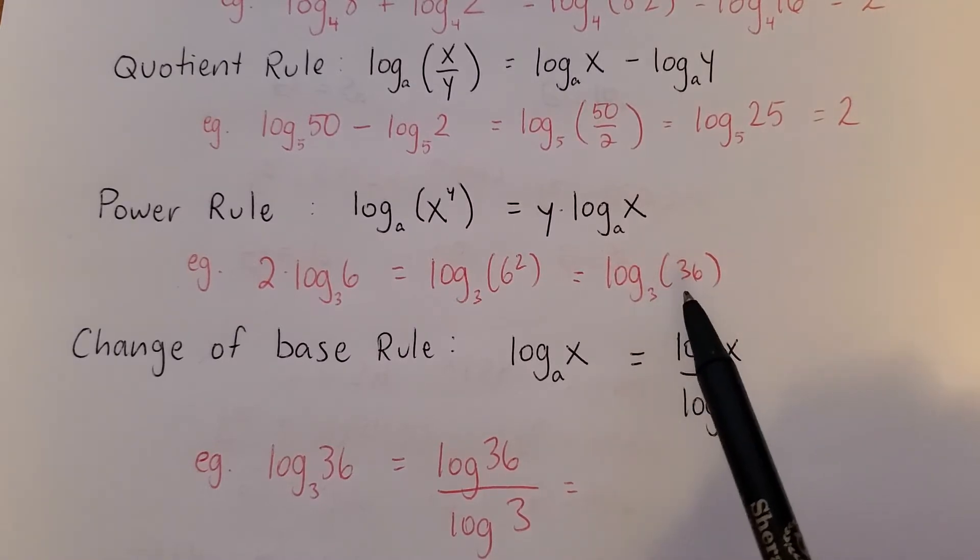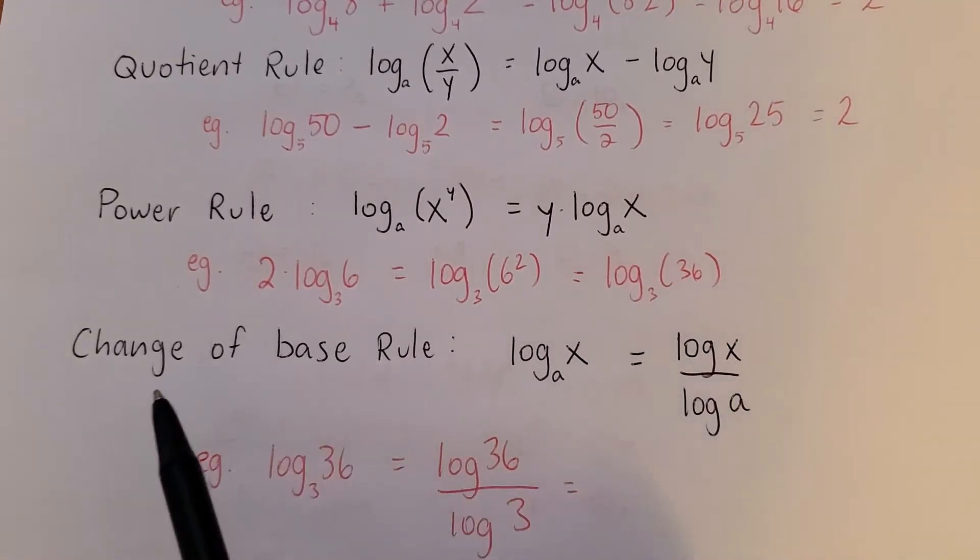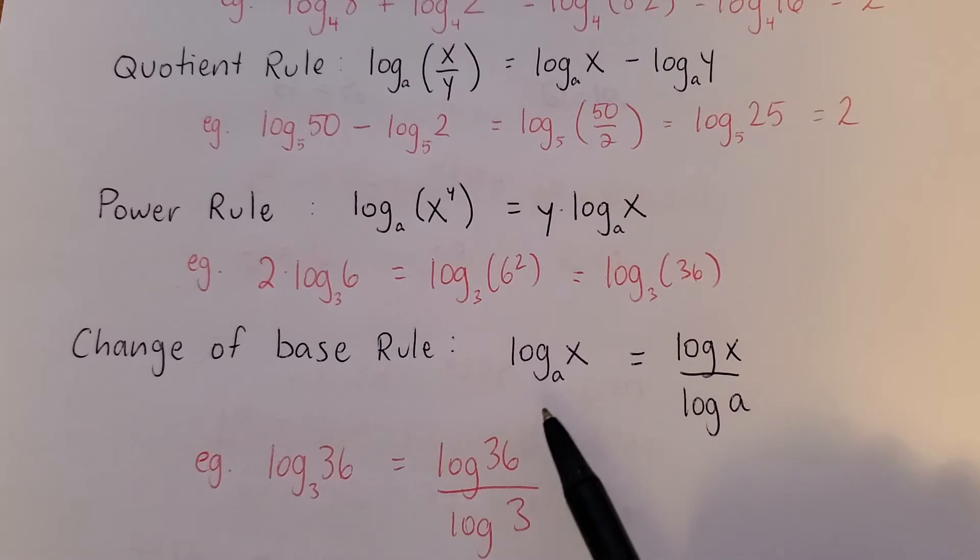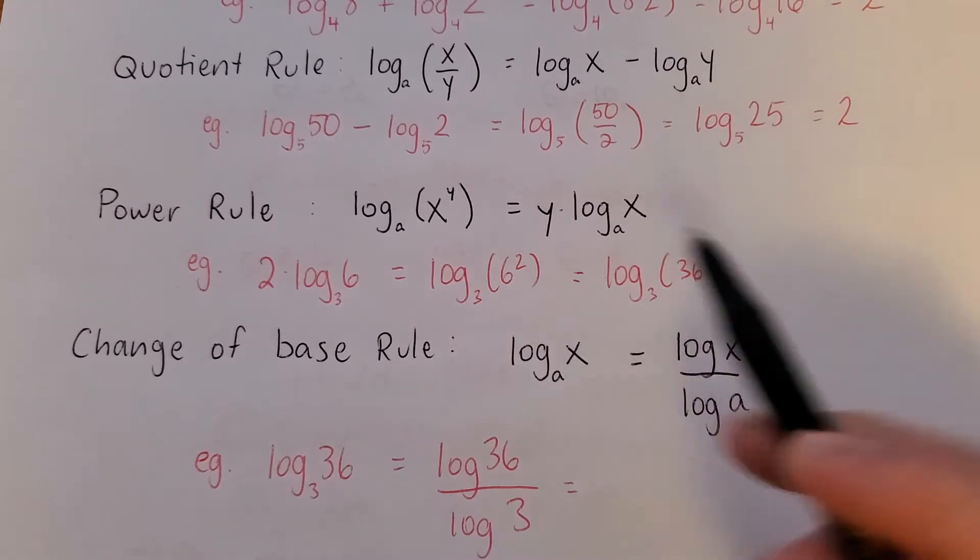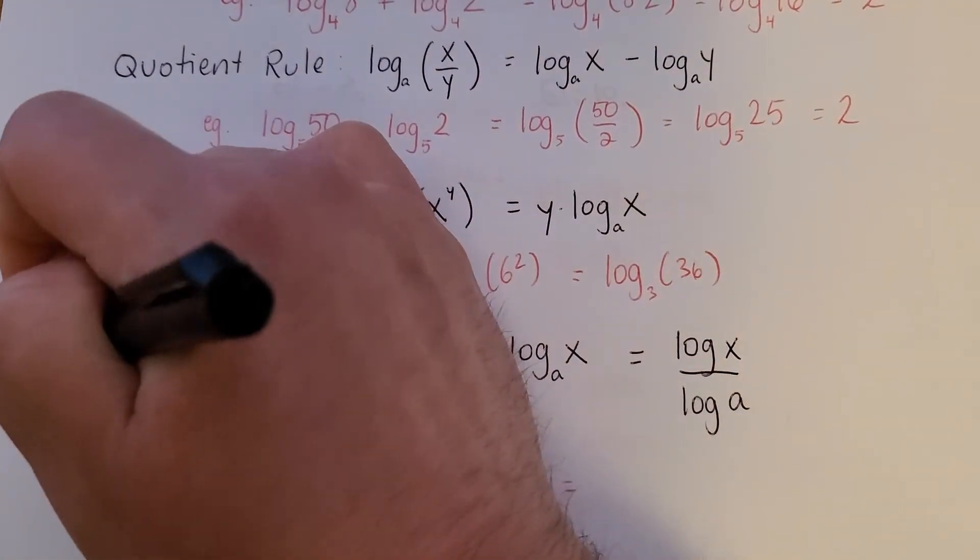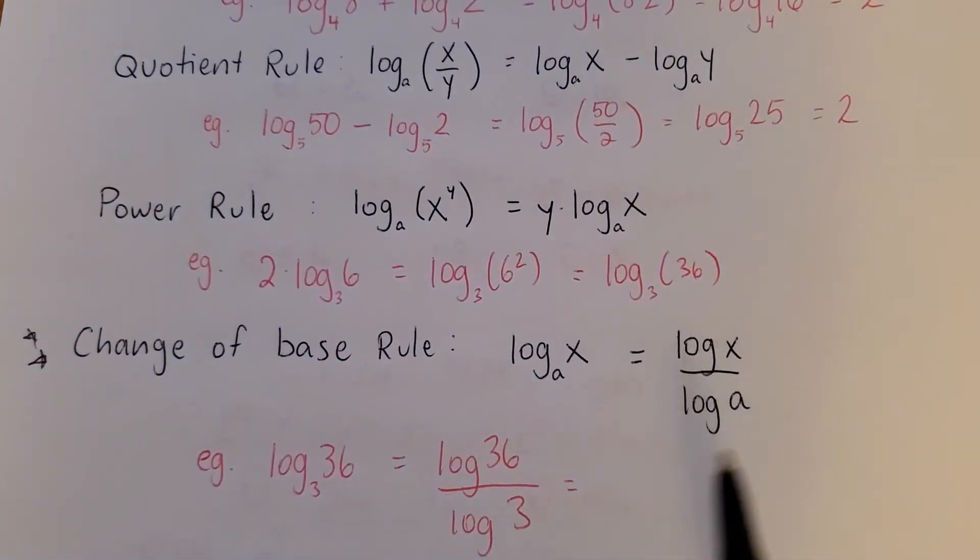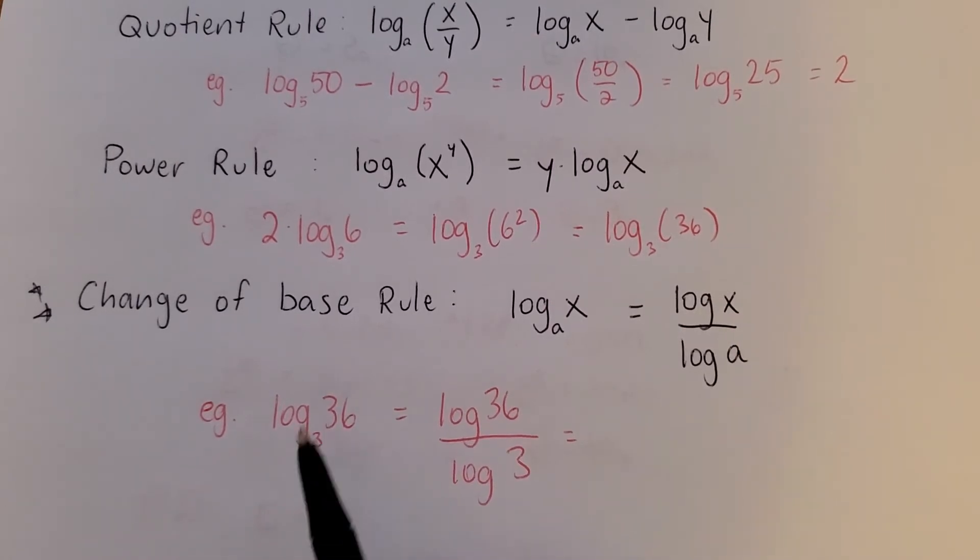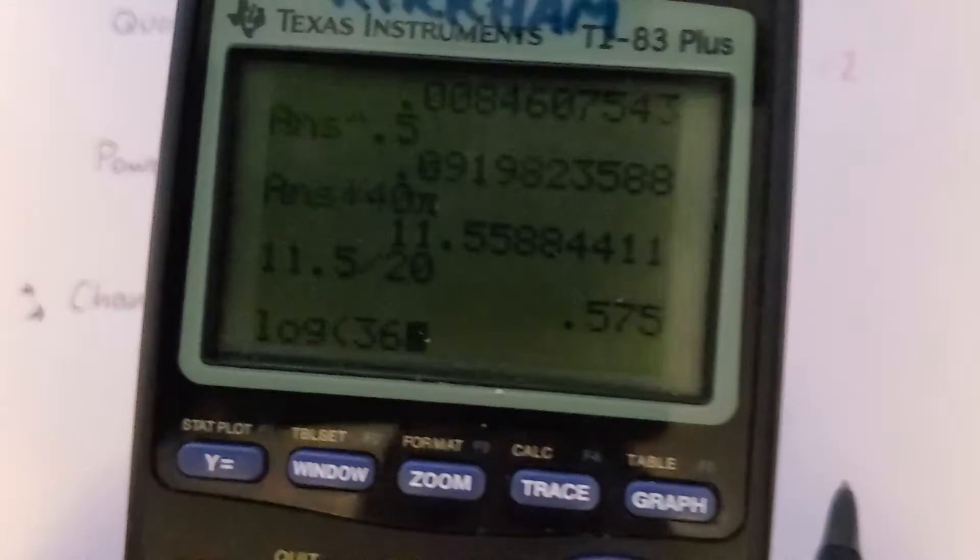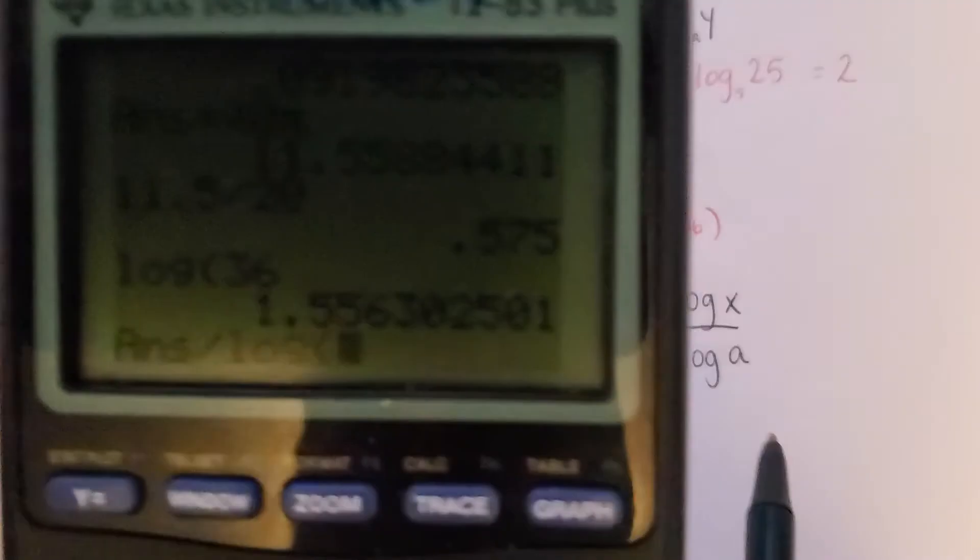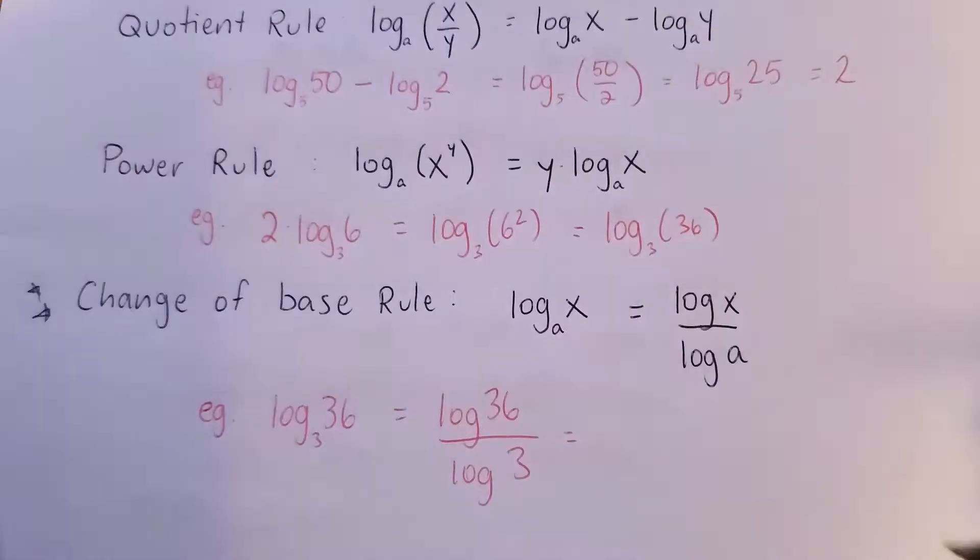This one I can't solve yet, but I can with the change of base rule. Check it out. If you want to calculate a log that you can't, like I don't know 3 to the power of what equals 36, I have no idea. This is super useful. You can just divide. Take log with a big number divided by log with a little number. So log 36 divided by log 3 is 3.26.